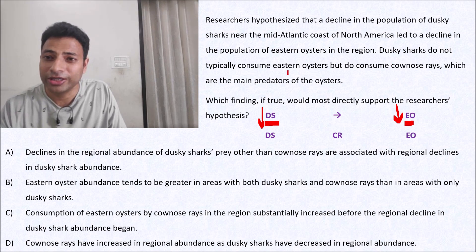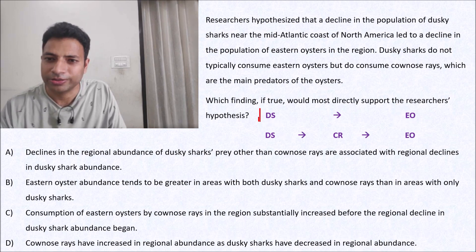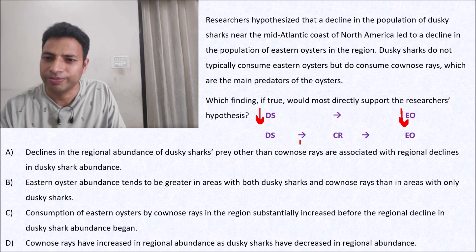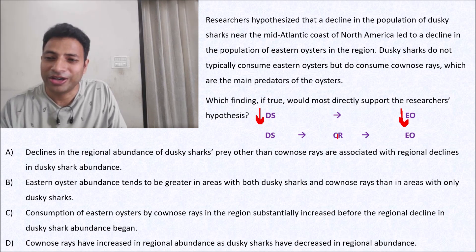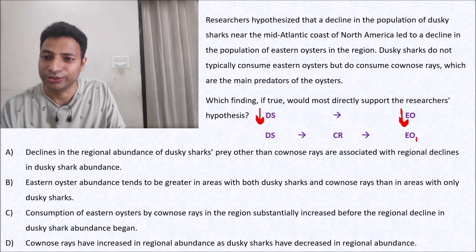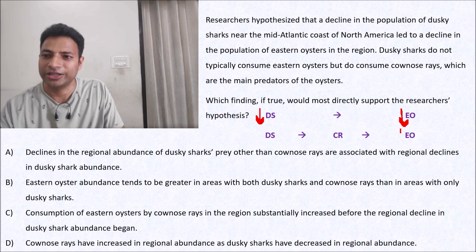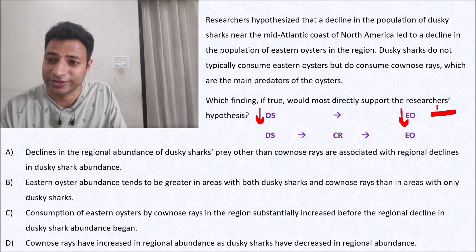We're also told that dusky sharks do not typically consume eastern oysters, but do consume cow nose rays. So I'll represent that in the diagram: decline in DS led to decline in EU. Dusky sharks don't eat eastern oysters — they actually eat cow nose rays, represented as CR — and CR eat EU. This much information is given, and the first statement is the hypothesis.